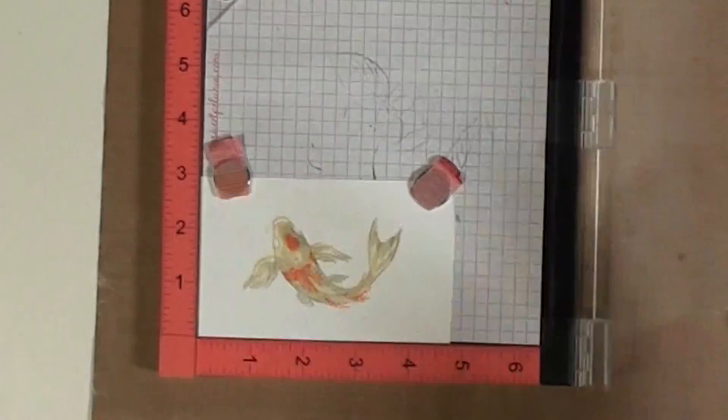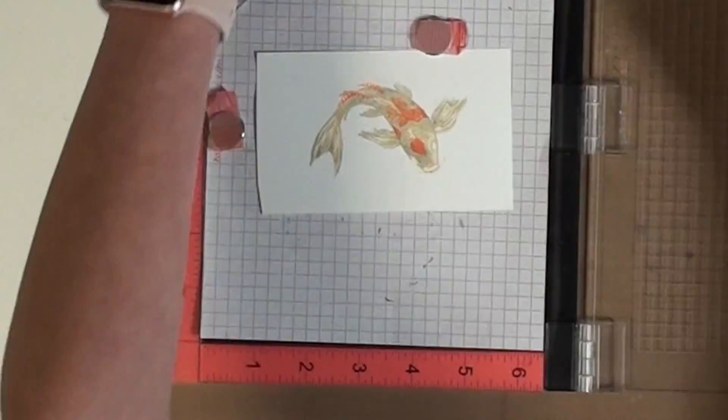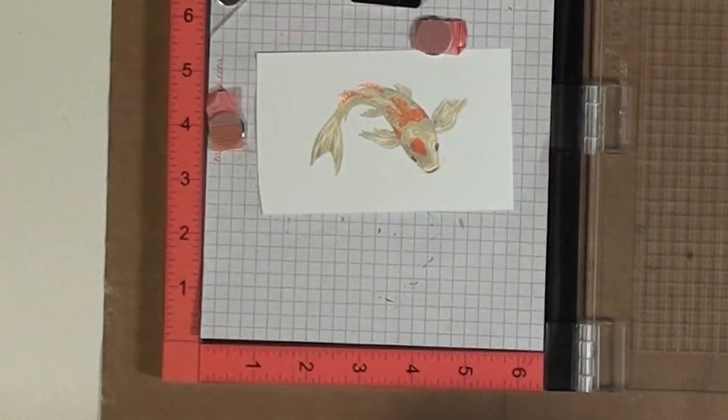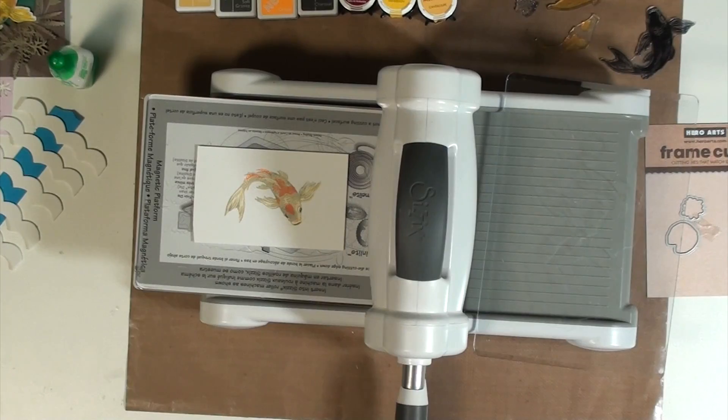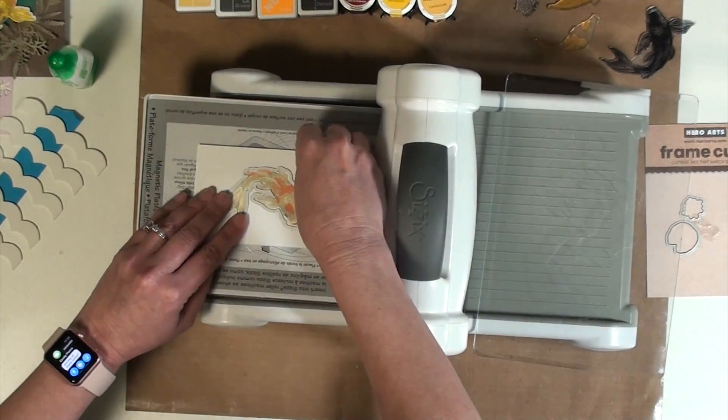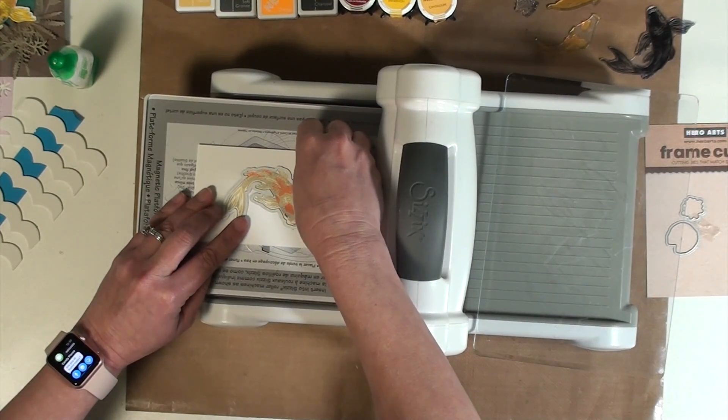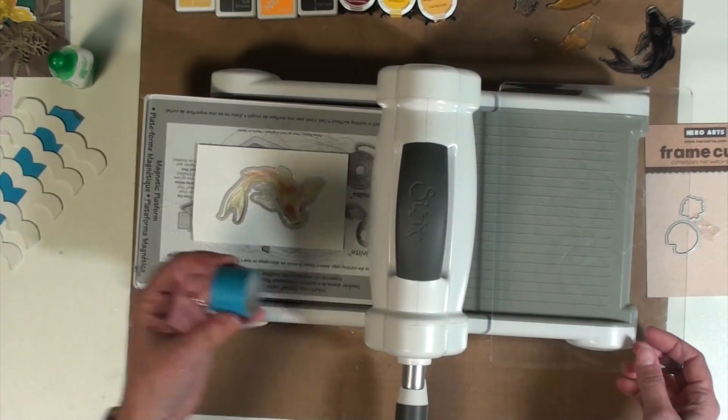For the face details I just used a small acrylic block to add that since it's pretty easy to line up you don't really need the MISTI for that. At this phase I started die cutting all the fish and as well as the other pieces to go into the card.